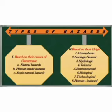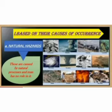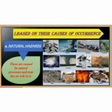The first type based on their causes of occurrence is classified into three types. The first one is natural hazards. These are the results of natural processes and man has no role to play in them. Examples of natural hazards are earthquakes, floods, cyclonic storms, droughts, landslides, tsunamis and volcanic eruptions.